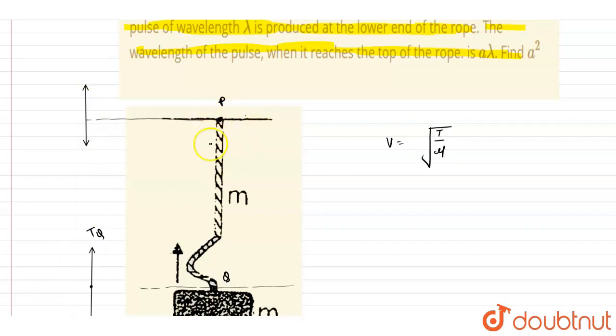TP equals 2mg. The velocity is proportional to T, and the frequency will not change, only the wavelength will change. We know that velocity equals frequency times